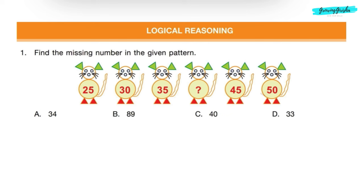Logical Reasoning. Question 1: Find the missing number in the given pattern. The first number is 25. If we add 5 to 25, we get 30. Then again we add 5 to 30, we get 35. Then again we add 5 to 35, so we will get the missing number 40. And this goes ahead: 40 plus 5 is 45, 45 plus 5 is 50. So the missing number is 40. Correct answer is option C.